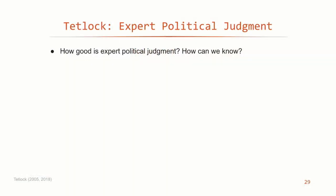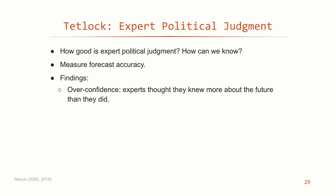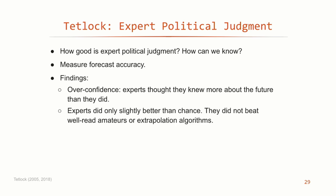Tetlock asked himself, about 20-plus years ago — the book came out 20 years ago — how good is expert political judgment, and how can we know? He decided to measure forecast accuracy. Unless you're saying something is 0% or 100% likely, you can't say whether a probabilistic forecast is right or wrong. But you can ask: does someone who says something is 70% likely — do those things tend to happen 70% of the time? Are they well calibrated? What he found, and I'm sorry, this is always a touchy subject, is that experts are wildly overconfident. Things they say are 100% likely happen only about 80% of the time. Experts only did slightly better than chance, and did not beat well-read amateurs or fairly basic extrapolation algorithms.